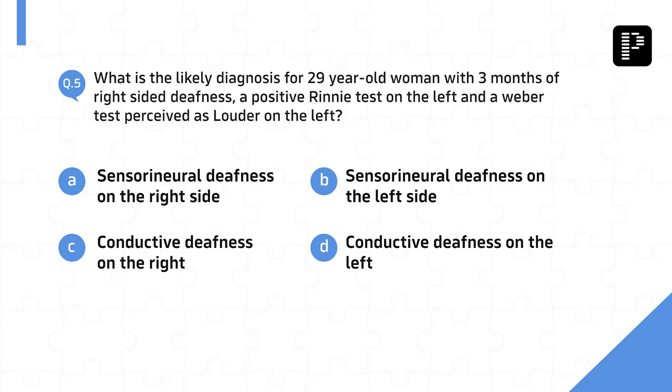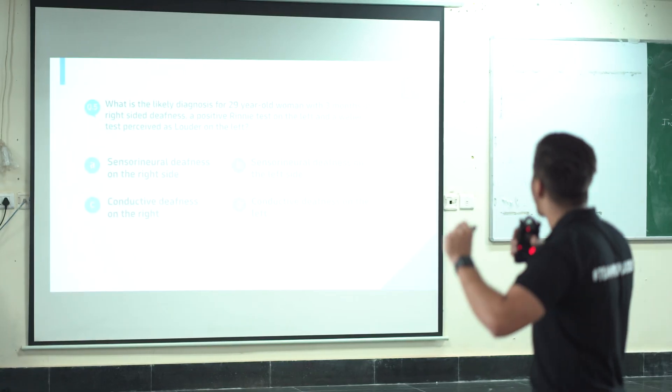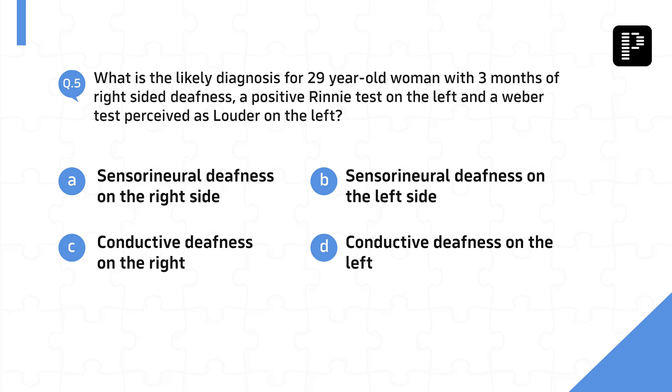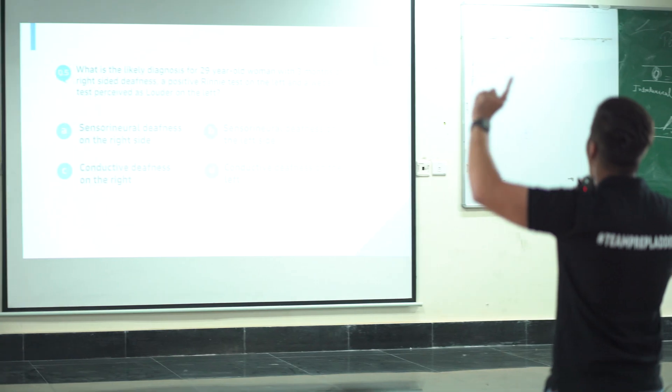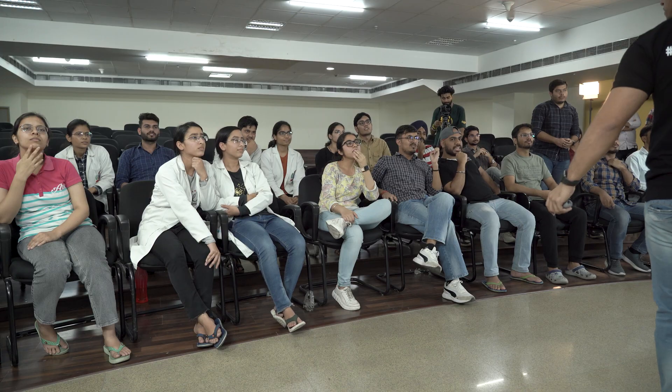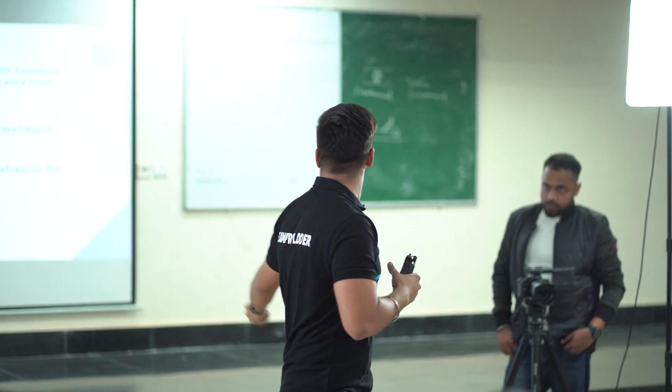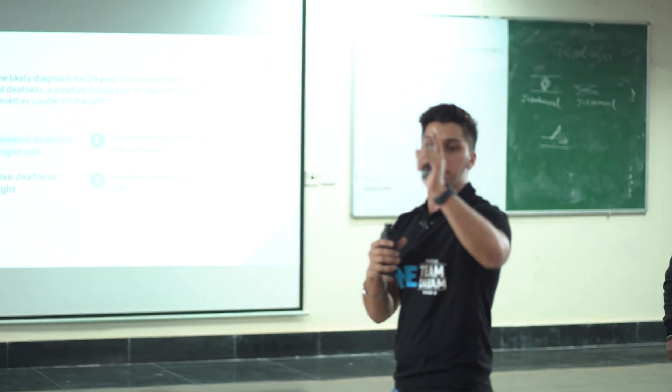Next question: which is the likely diagnosis of a 29-year-old woman with three months of right-sided deafness, a positive Rinne test on the left, and a Weber test perceived as louder on the left? It's going to be a tricky question. One, two, three. Answer: sensory neural deafness on the left side. Answer is wrong — the answer is E. Please appreciate because confidence really matters!